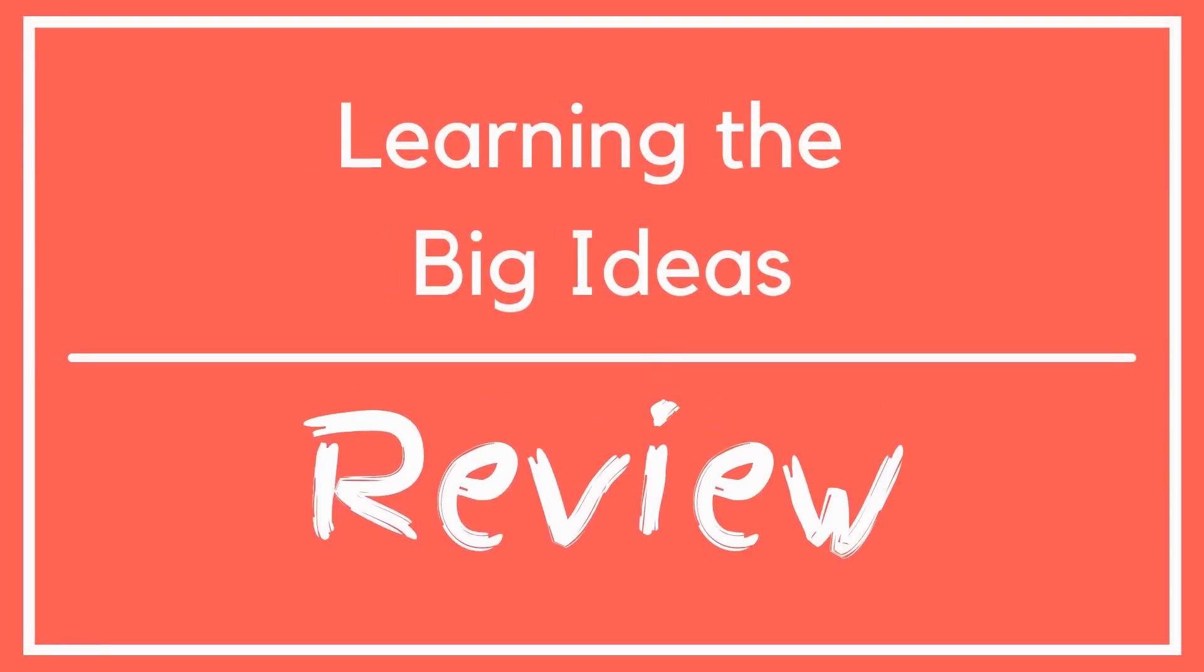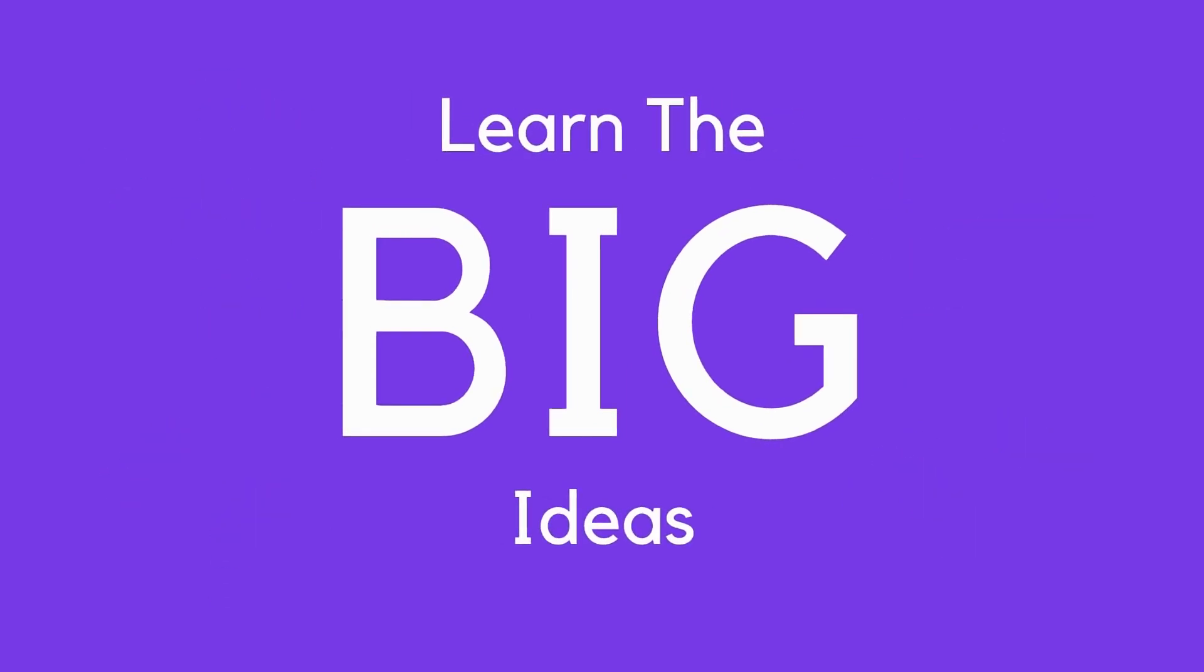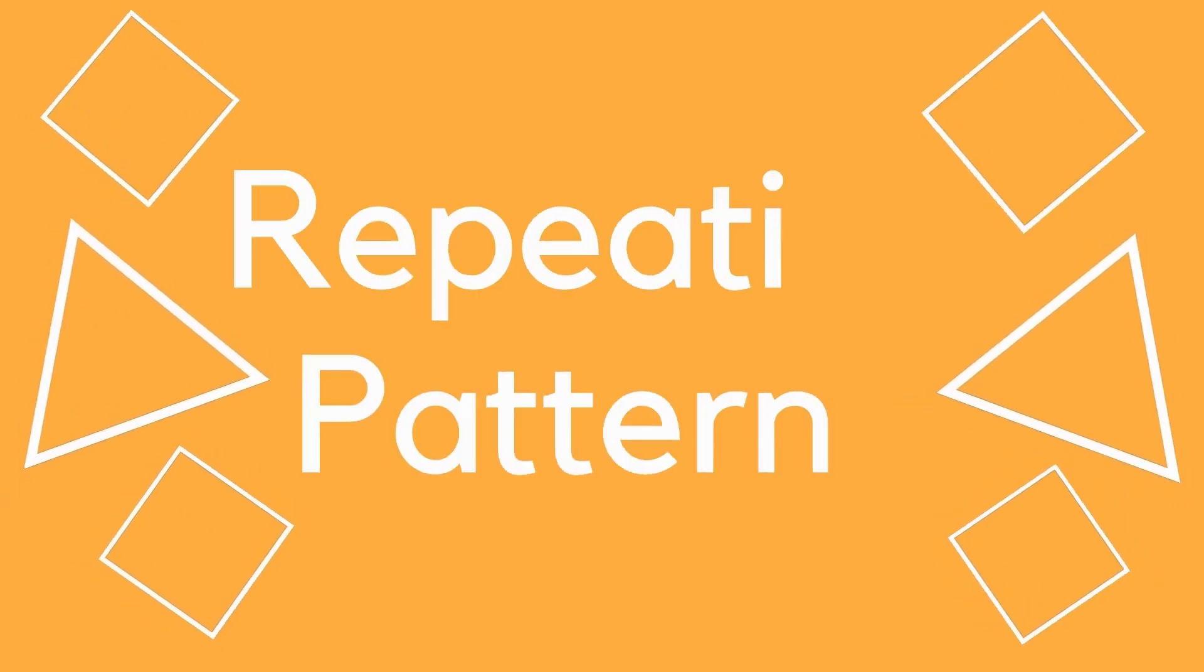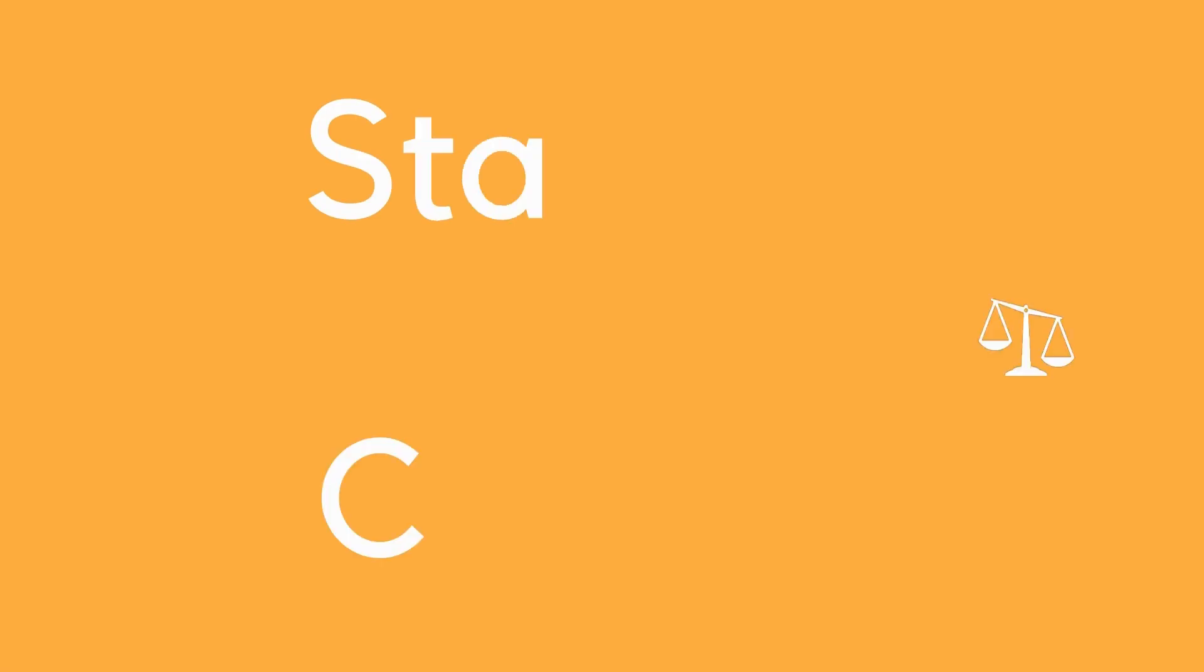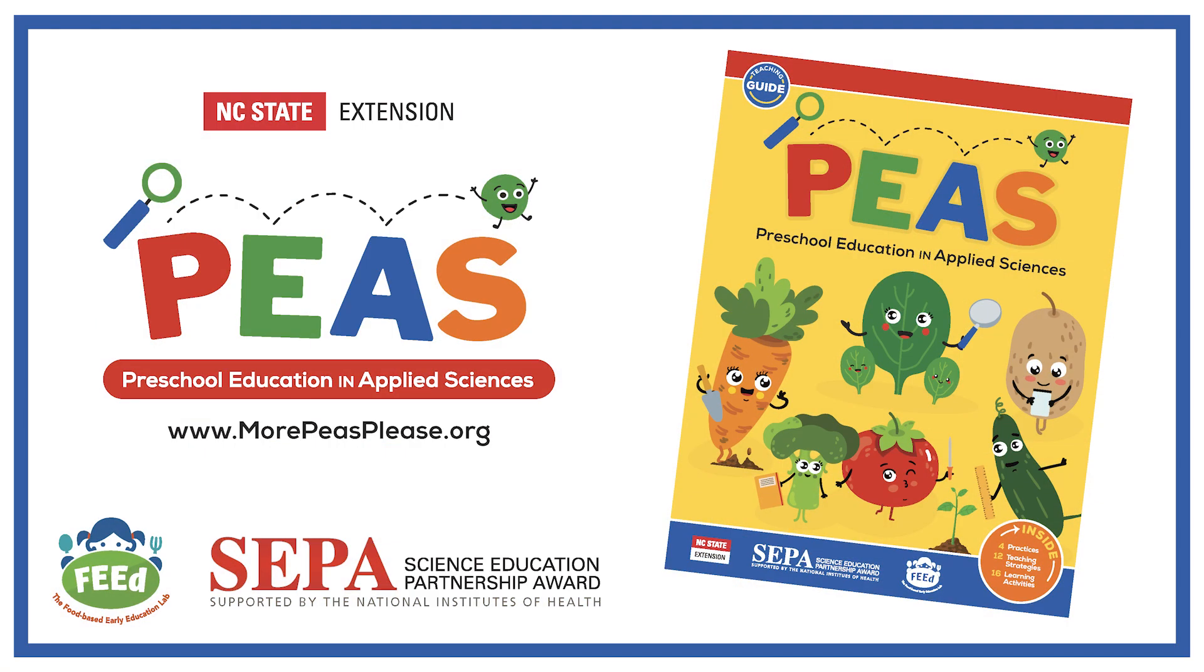Now that you've learned about the practice science strategy: learning the big ideas, let's take a moment to review what we've learned. Think about integrating big ideas of science into your learning experiences as you focus on preparing children for kindergarten. You can implement the big ideas in science by focusing on repeating patterns, cause and effect, structure and function, and stability and change. For more ideas, check out your PEACE teaching guide.